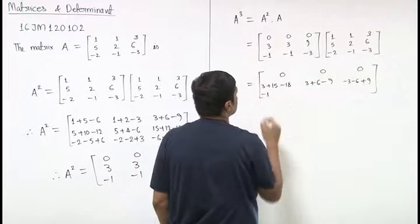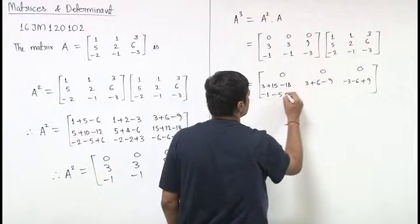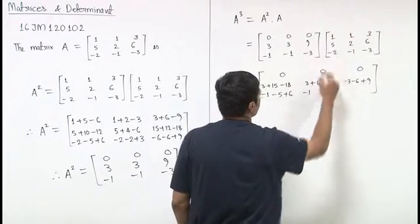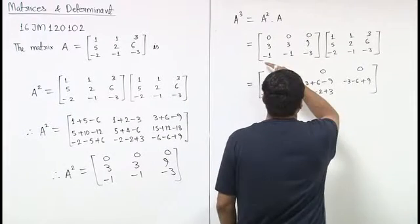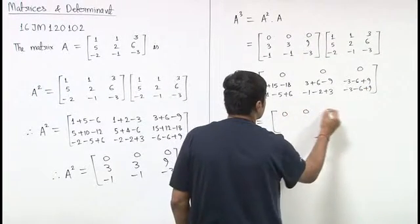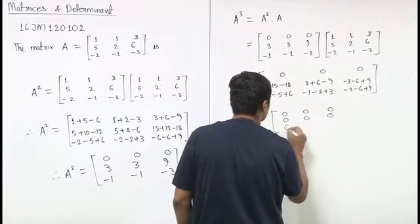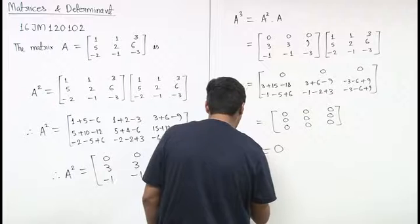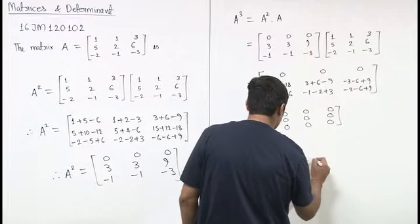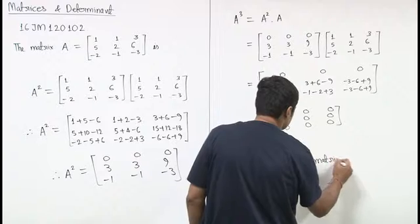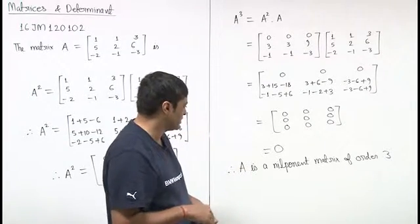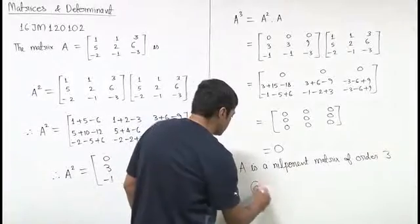R3 versus C1: (-1)×1 + (-1)×5 + (-3)×(-2) = -1 - 5 + 6 = 0. R3 versus C2: (-1)×1 + (-1)×2 + (-3)×(-1) = -1 - 2 + 3 = 0. R3 versus C3: (-1)×3 + (-1)×6 + (-3)×(-3) = -3 - 6 + 9 = 0. We can observe this is a null matrix, which means A is a nilpotent matrix of order 3. Since A cubed equals zero, option C is the correct answer.